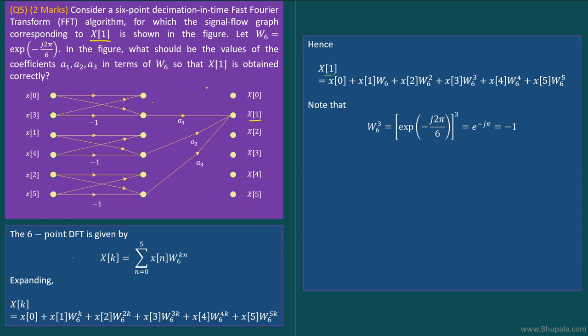W6^3 is nothing but e^(-j2π/6)^3, so that simplifies to e^(-jπ), which is equal to -1. Similarly, W6^4 can be split into W6^3 × W6. But W6^3 we have just seen is equal to -1, and hence W6^4 would be equal to -W6.